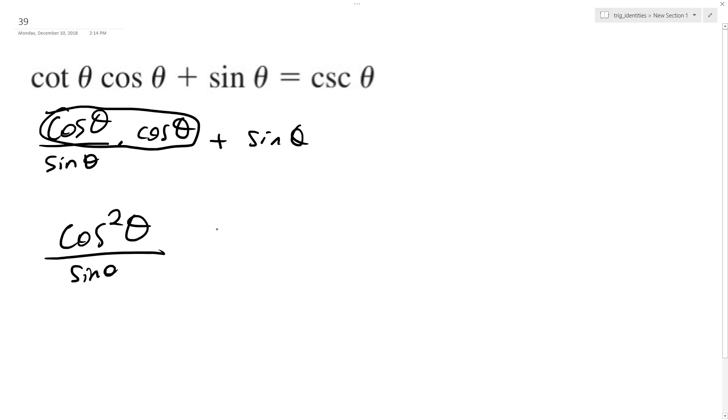And then sine, well, I'm going to multiply this by sine theta over sine theta so I get a common denominator. It's basically like multiplying it by one because this can cancel out. So I get sine squared theta over sine theta.